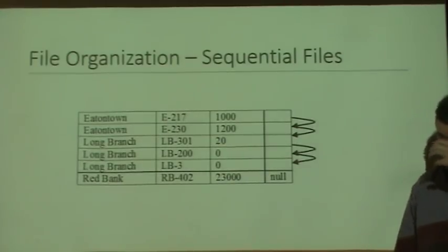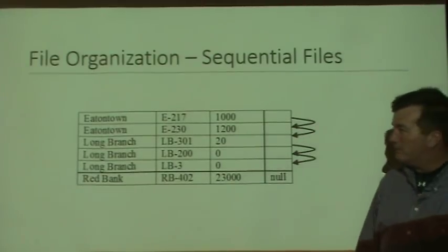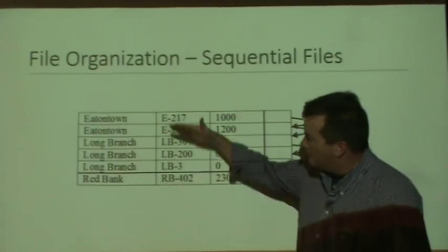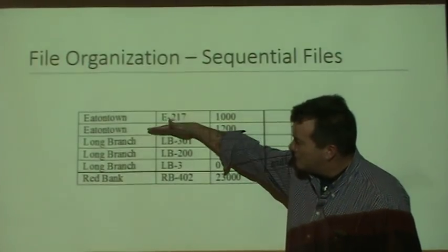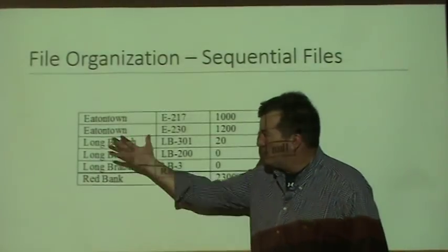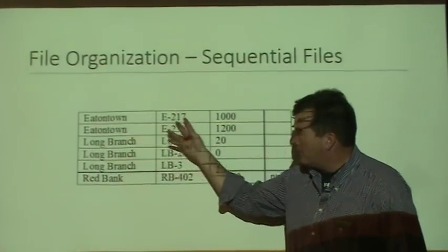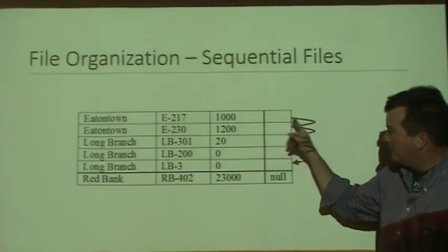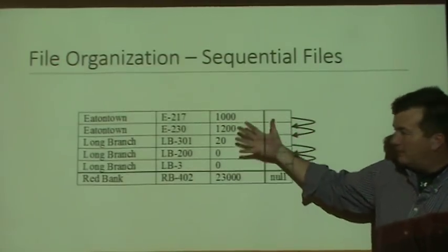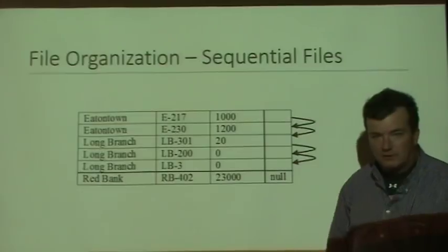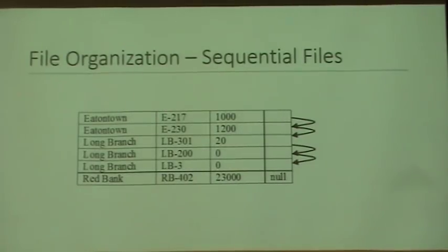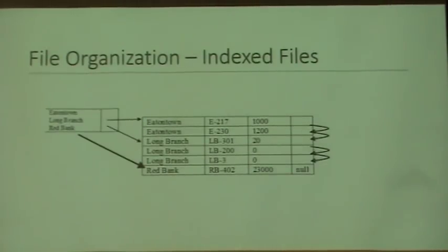There are different techniques for recording a file on disk. One technique is a sequential file, where the files have some type of order to them. In a database context, records have a pointer at the end to the next record, so the data is in order. That would be called a sequential file.